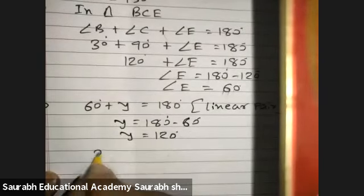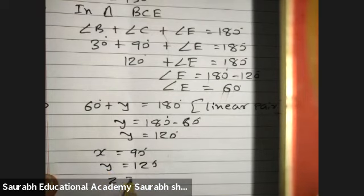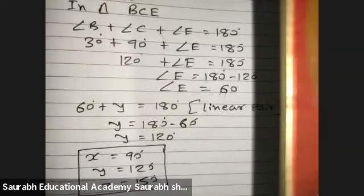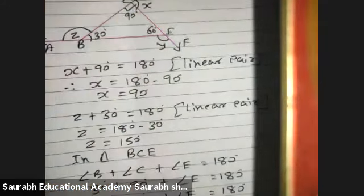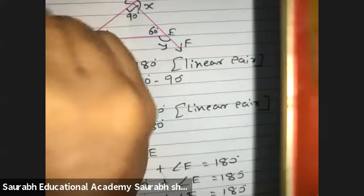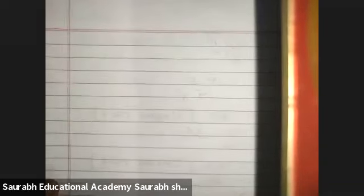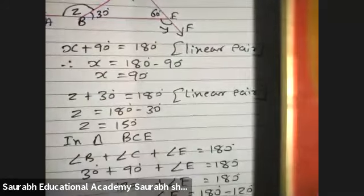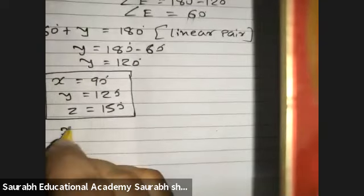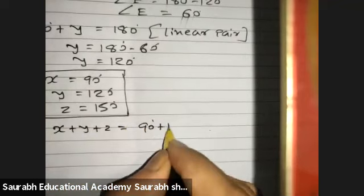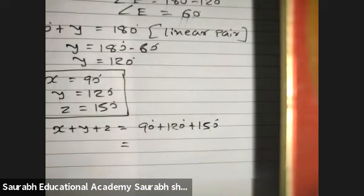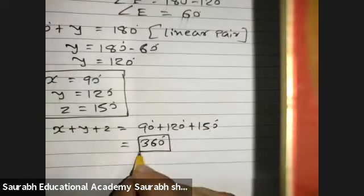So all three angles are found: X equals 90, Y equals 120, and Z equals 150. They also want X plus Y plus Z, which equals 90 plus 120 plus 150, giving a total of 360. This uses linear pair angles and the angle sum property of a triangle.